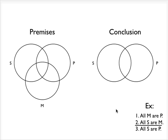So what we're going to do is map these premises and the conclusion onto the Venn diagram. Here on the left is the three category Venn diagram for the premises, and on the right is the two category Venn diagram for the conclusion.